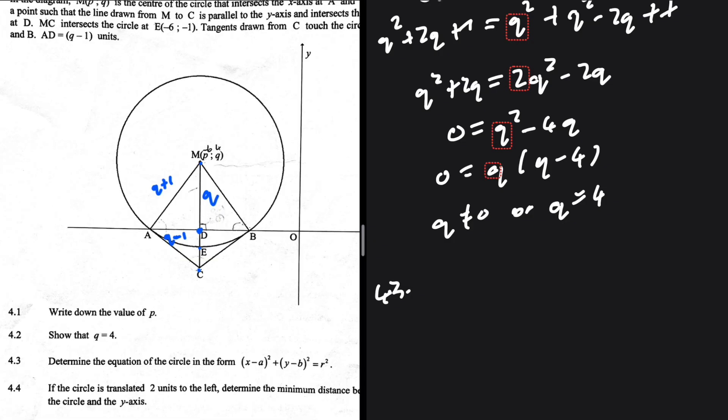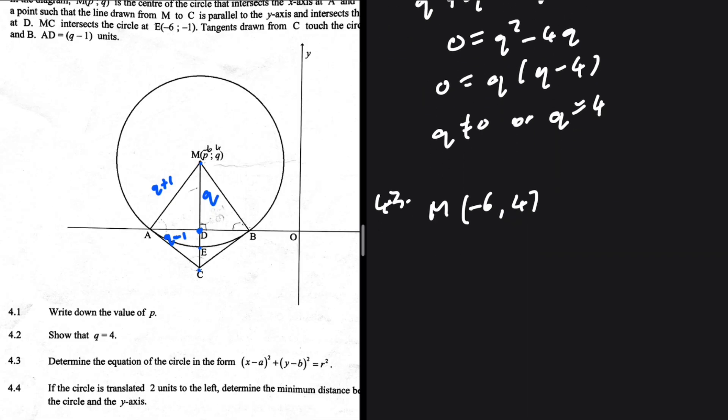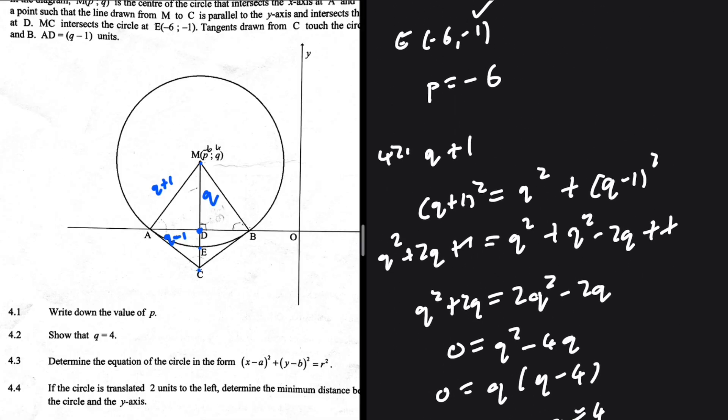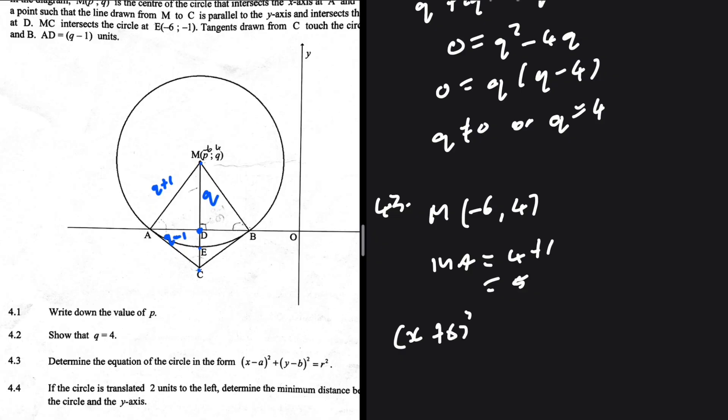4.3: Determine the equation of the circle in the form (x − a)² + (y − b)² = r². Starting with the centre: p is the x-value which M and E share, so that is minus six, and q is the y-value of M which is four — just calculated in 4.2. For the radius, MA equals q plus one, so that is four plus one, which equals five. The equation is therefore (x + 6)² + (y − 4)² = 25.